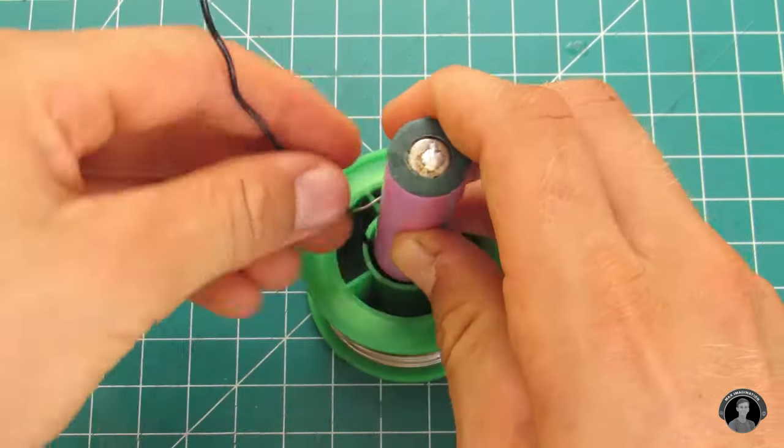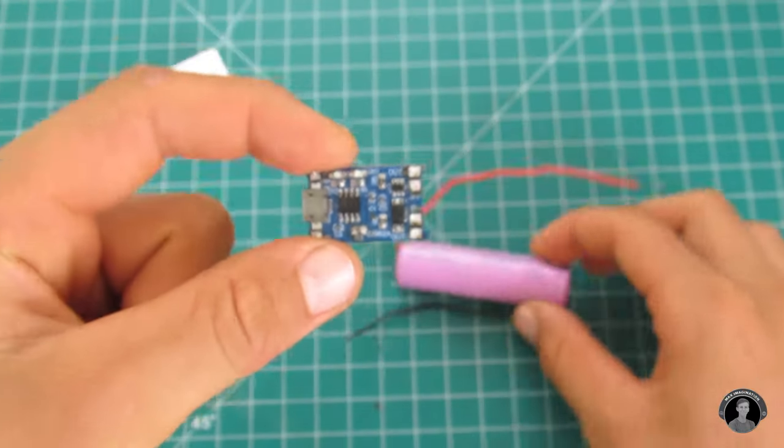Solder a couple of wires coming from the battery to the outputs of the TP4056 charging board.